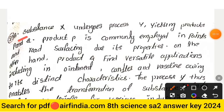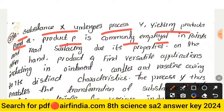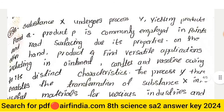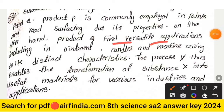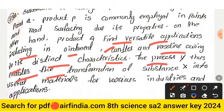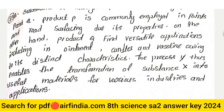Question number 23: Substance X undergoes a process yielding products P and Q. Product P is commonly employed in pens and roads due to its properties. Product Q finds versatile applications including in ointments, candles, and Vaseline owing to its distinct characteristics. Process Y enables the transformation of substance X into useful materials for various industries and applications.